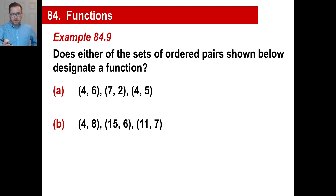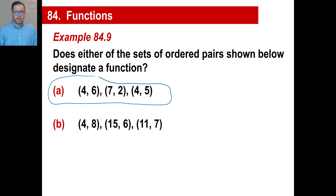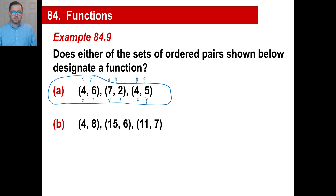Let's look at ordered pairs. For set A: you plug in 4 and get 6, plug in 7 and get 2 — but then you plug in 4 again and get 5. We already got a different answer for 4, so this is not a function. In a function, one input gives only one output.